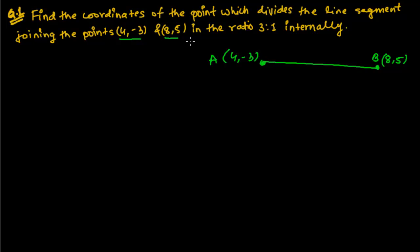Now we have to find a point, suppose it is here. Which is dividing, let me give this name P. This P point is dividing this AB line in the ratio of 3:1. So we have to find out the coordinates of this P point.